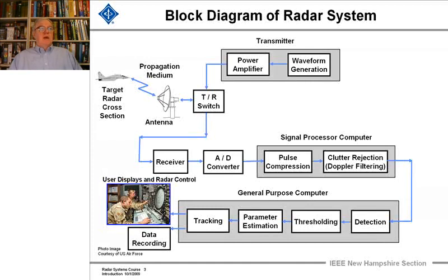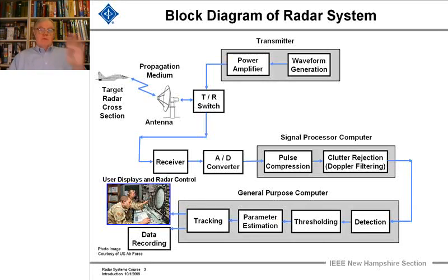Then the signal is sent to a power amplifier which will amplify the signal and give it the strength to detect a target that's very far away. These amplifiers can have gains of four or five orders of magnitude easily. This box would represent a series of amplifiers in series and in parallel working together so that the total gain output would be 10 to the fifth, or it could be one large tube amplifier. In any case, there's usually a power amplifier subsystem.